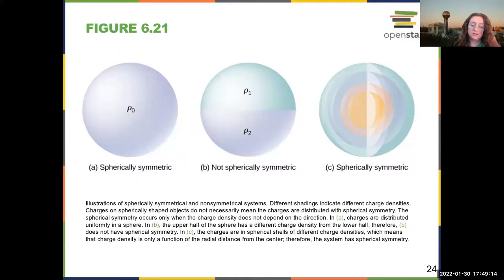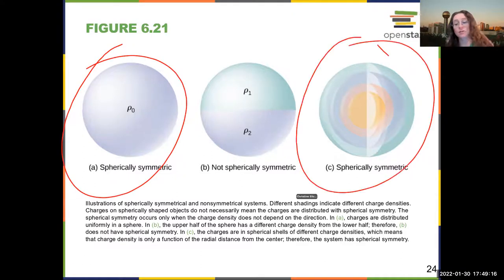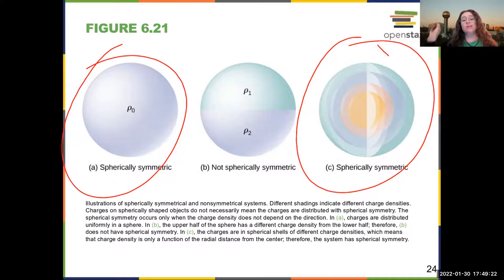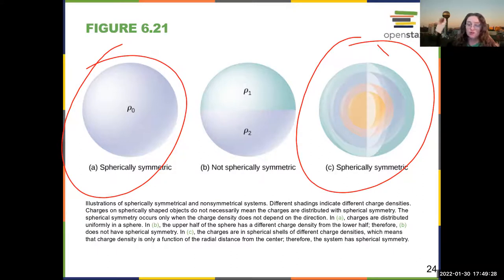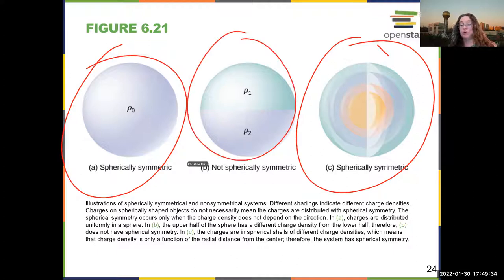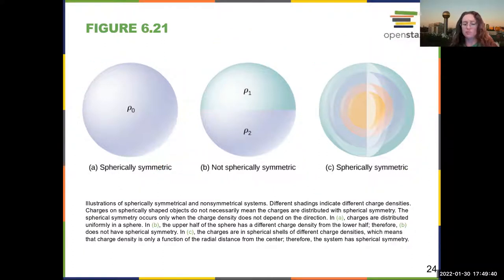This first one is spherically symmetric, and this one is spherically symmetric too. Your charge density can change with radius, but it has to look the same at whatever angle you go out in. As long as you're at a certain distance from the origin, you still have spherical symmetry. This one is not spherically symmetric — if you wanted to figure out what this is, you'd have to do some ugly math. There are undoubtedly some tricks, but it's much trickier.